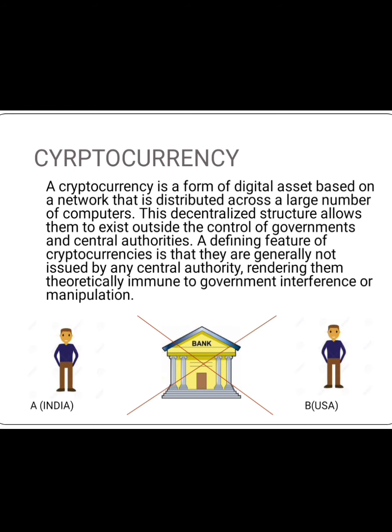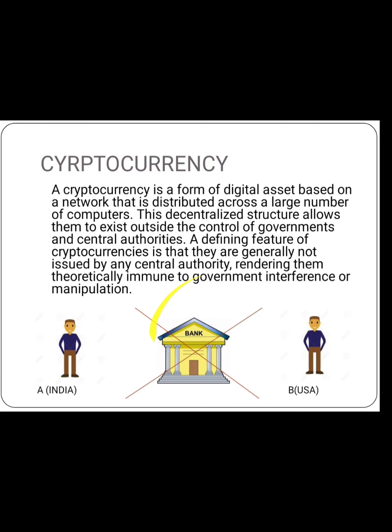That is called cryptocurrency. This decentralized structure allows it to exist outside the control of governments and central authorities. A defining feature of cryptocurrencies is that they are generally not issued by any central authority, rendering them theoretically immune to government interference and manipulation. By not having an intermediary, person A will not need to pay any charges for sending his money to a person living in another country.